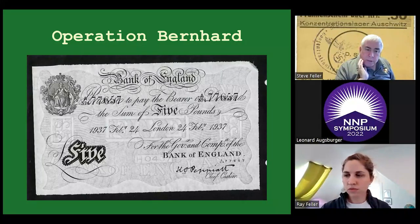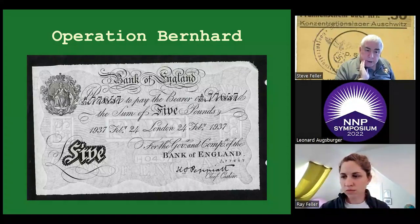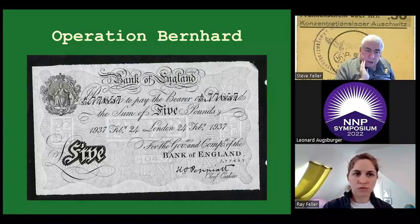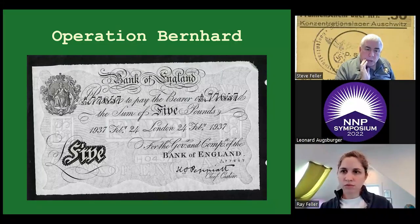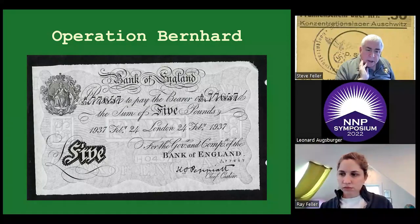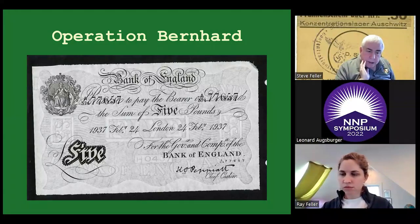The notes were so good that they fooled the Bank of England in Switzerland. Eventually the British found out about it, recreated British pound notes, and withdrew the counterfeits from circulation. But they were still circulating in neutral countries or other parts of the world well after the war. There is an Operation Bernhardt five-pound note that is a counterfeit — counterfeits are now easier to come by than the originals.